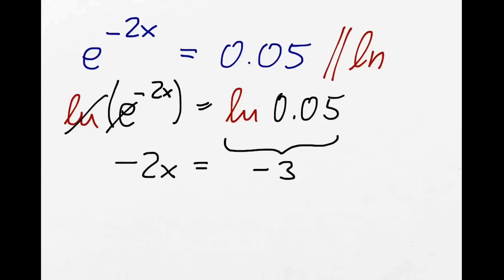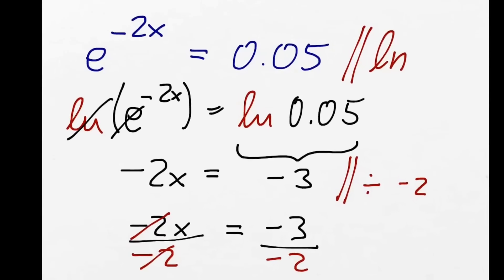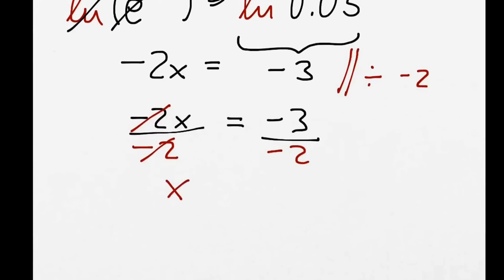We divide now both sides by minus 2. We get minus 2x divided by minus 2 — the minus 2 cancels out and we've got x left. x equals: the minus cancels out, and we've got 3 divided by 2, or roughly 1.5.